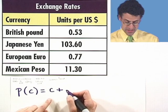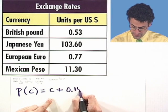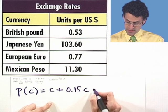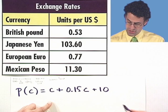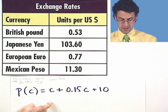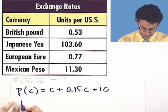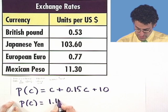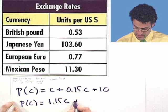And the tax is what? 15% tax, so that's 0.15 times the cost. That's the tax. And plus there's that 10 pound charge for the shipping. So the price is going to equal 1.15 C plus 10.